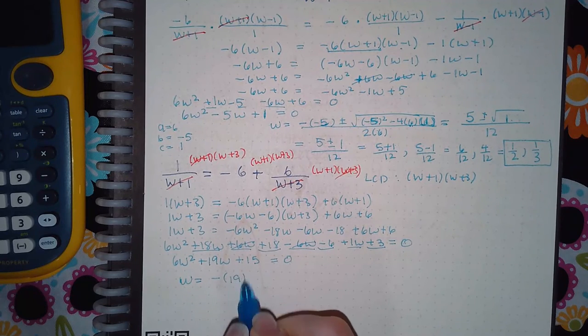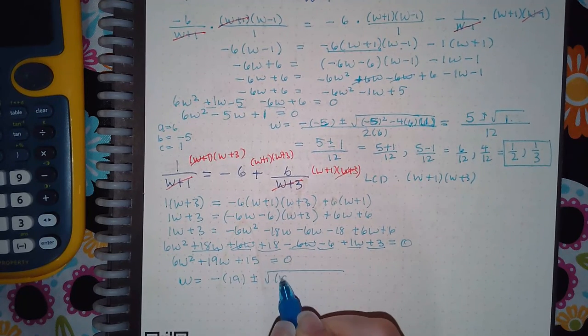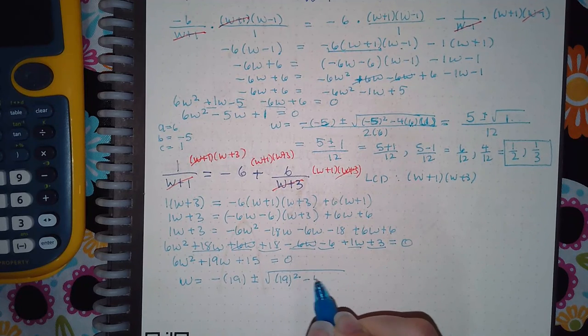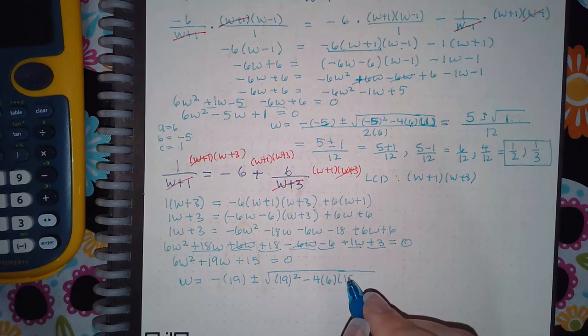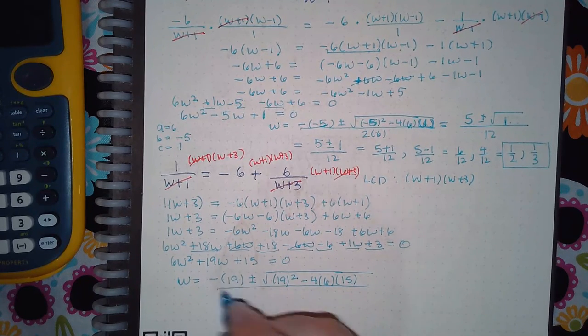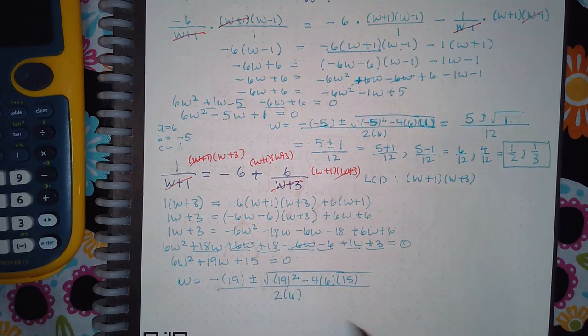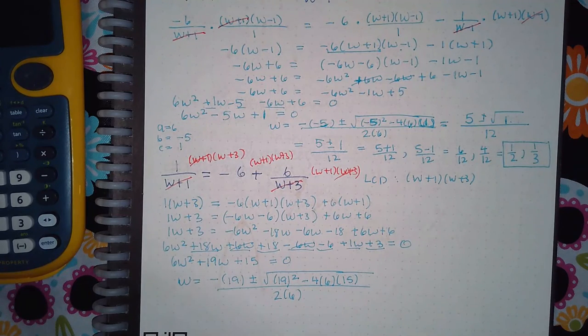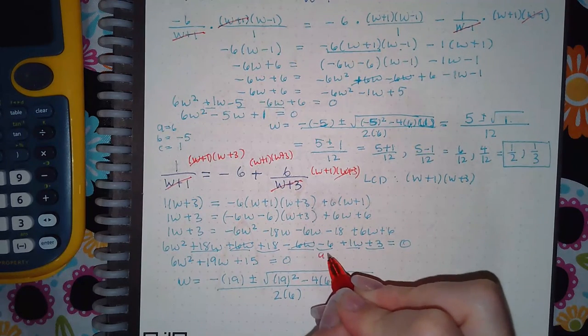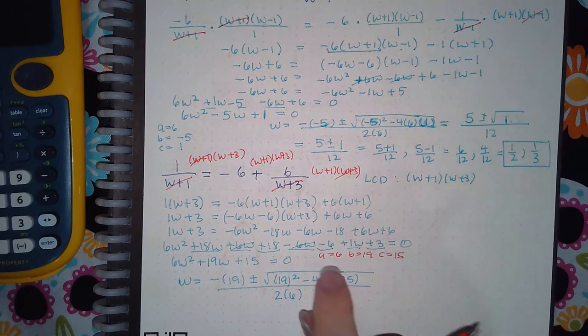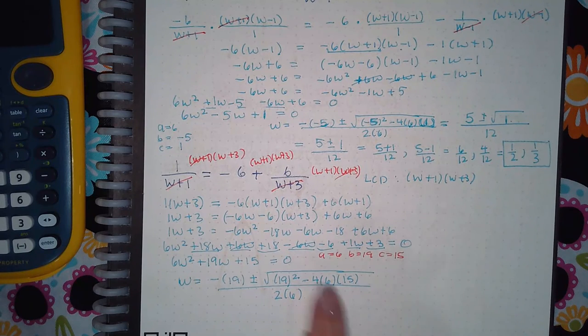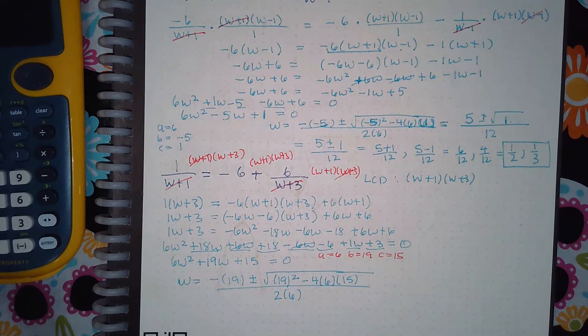So now we use our quadratic formula. So w will equal negative b, b is positive 19, plus or minus positive 19 squared minus 4 times positive 6 for a times positive 15 for c, all over 2 times positive 6 for a. If you want, you can always say a equals 6, b equals 19, and c equals 15 if you need to write this out before you do the formula. I've been doing it all along, but it's not necessary if you can keep track of what goes where.